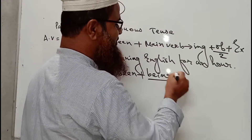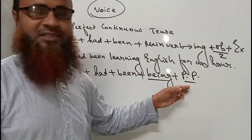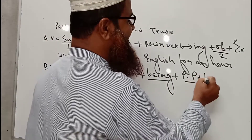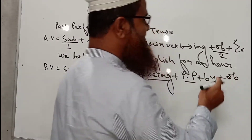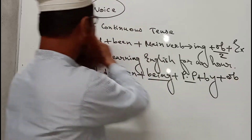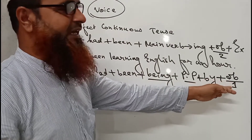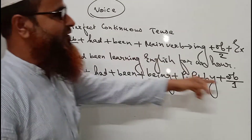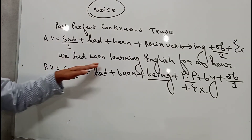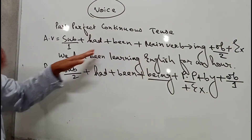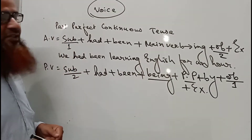Then we have to use the past participle form of the main verb. This object now becomes part of the passive structure, and the original subject has become the object. If there is an extension we have to write it. This sentence is in past perfect continuous tense in active voice, and now we will change it into the passive one.